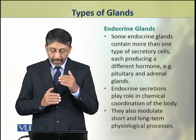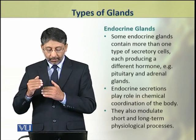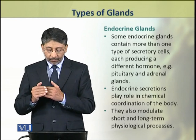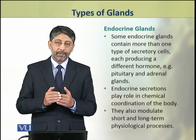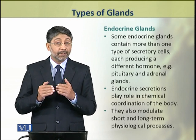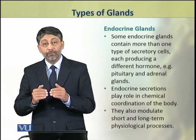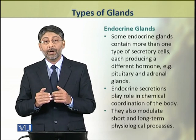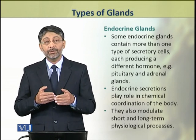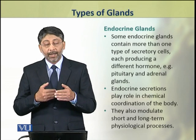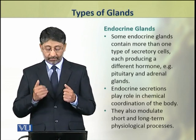The endocrine glands may contain one type of secretory cells, or some endocrine glands also have more than one type of secretory cells, and they produce a large number or more than one type of secretion.